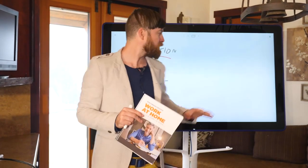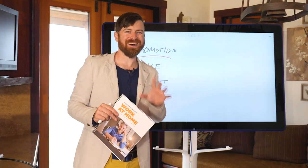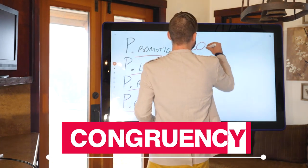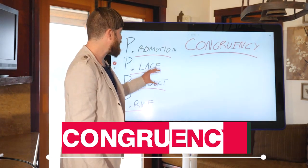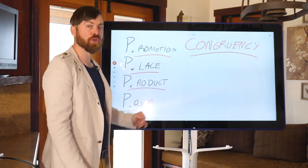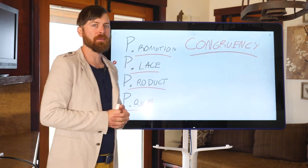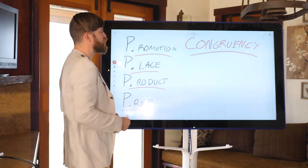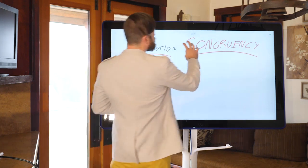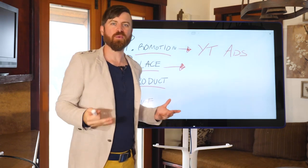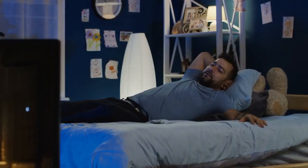The most important concept we're going to understand here is what I call congruency. If every one of the P's does not line up, if things are not congruent throughout the entire P's, then you won't make money. Let's use YouTube for instance. Let's say I choose YouTube as a place to promote. Do people on YouTube typically want to read a long sales letter or do they want to watch a video?